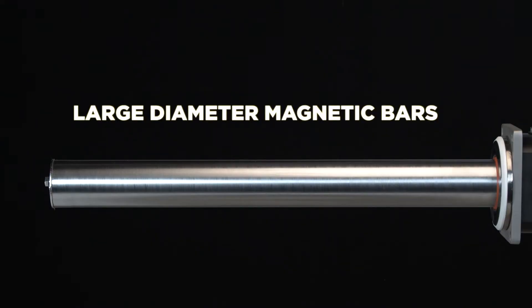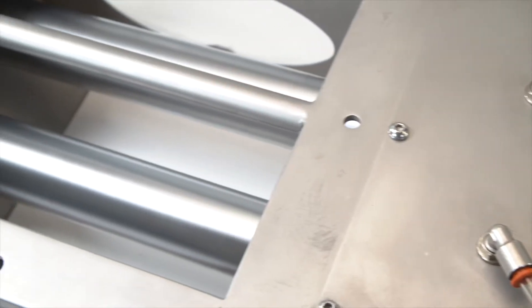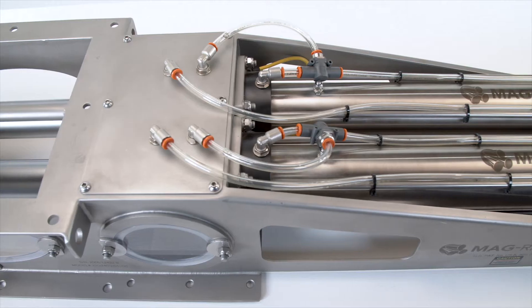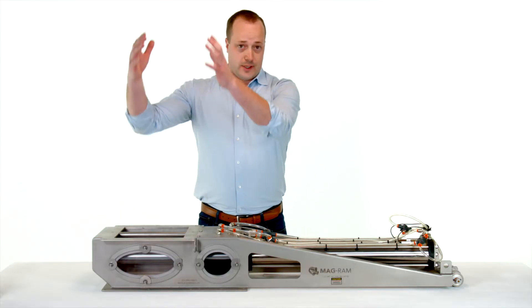These are the large diameter magnet bars which are two inch in diameter. They are actually the rams of these air cylinders. You can set this up with as many rams as you need depending on the size of the product stream.